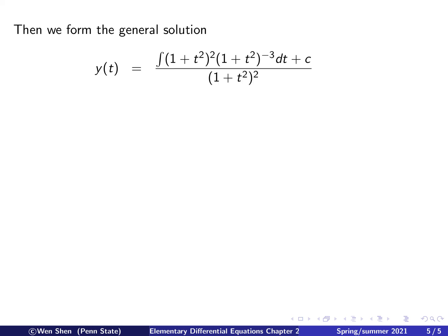Once we have found the integrating factor, we can just plug it in to form the general solution. 1 over mu, that's why we have this term in the denominator. Then we have to integrate mu, which is this term, times g, which is this term, dt, plus a constant.